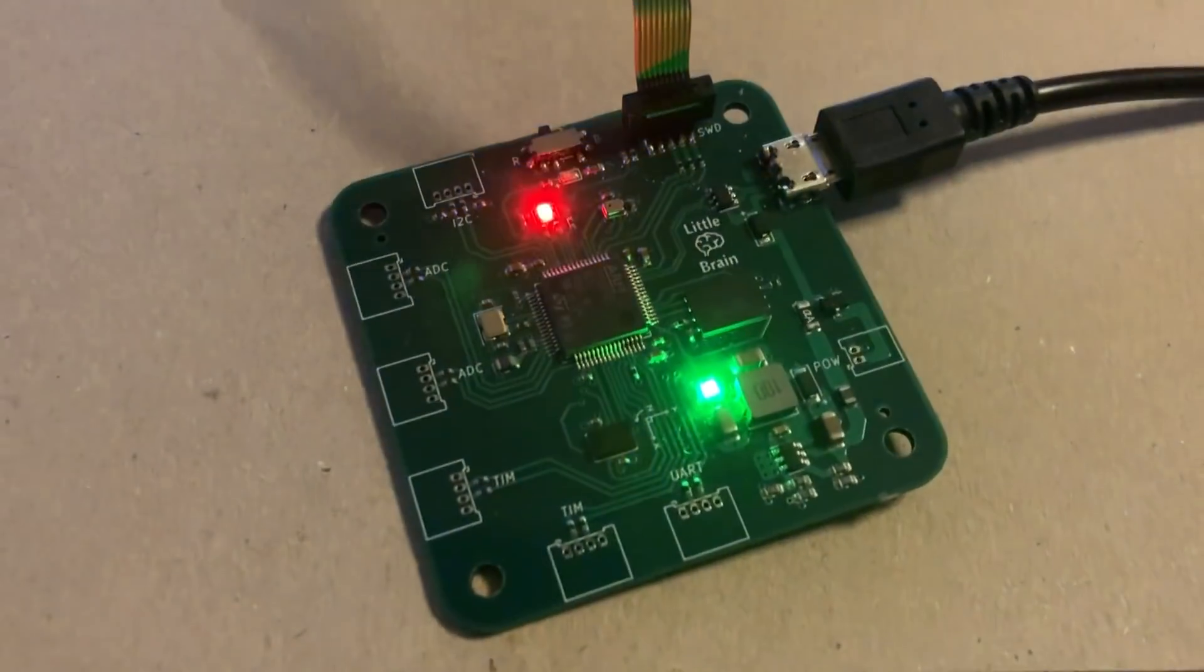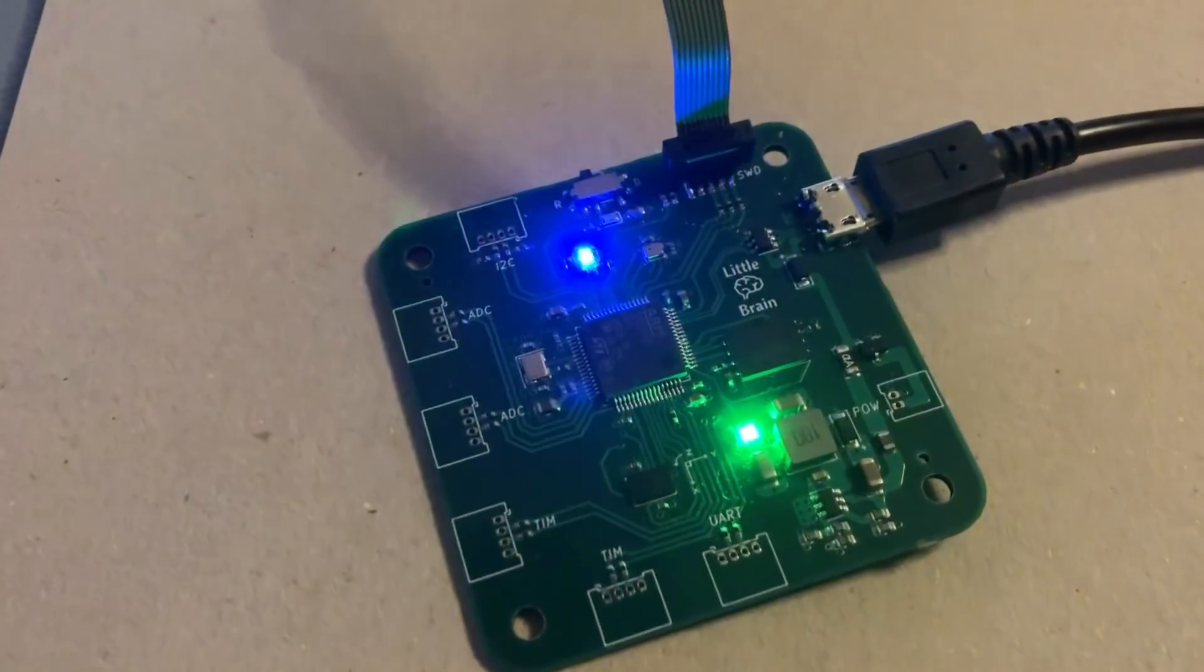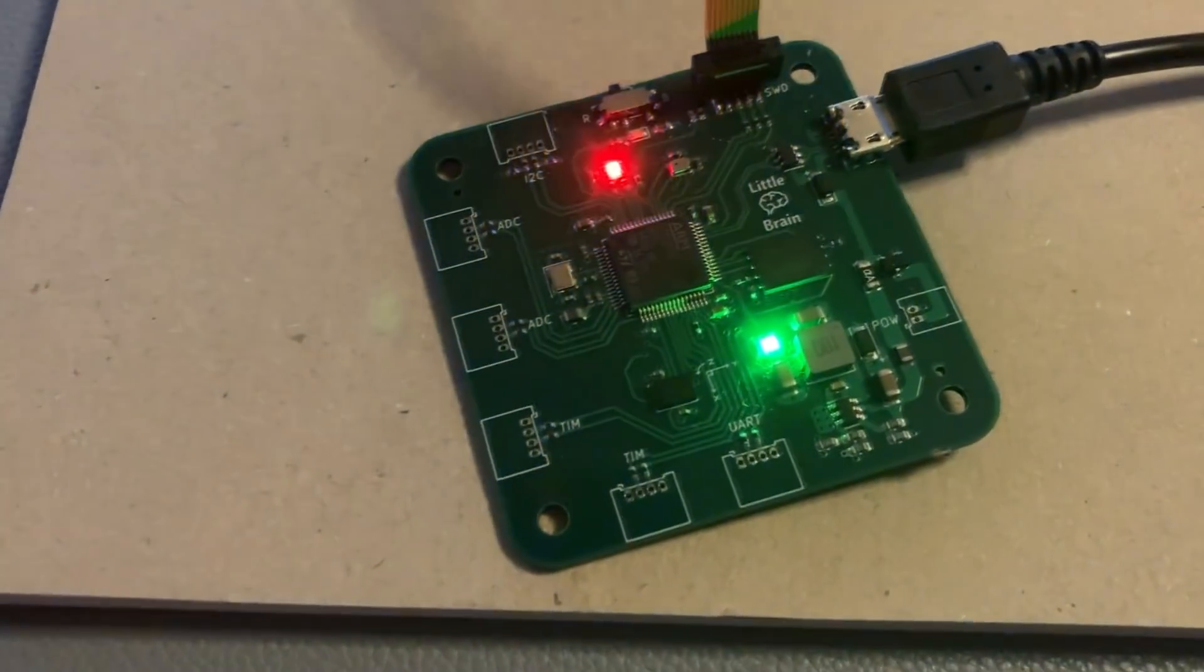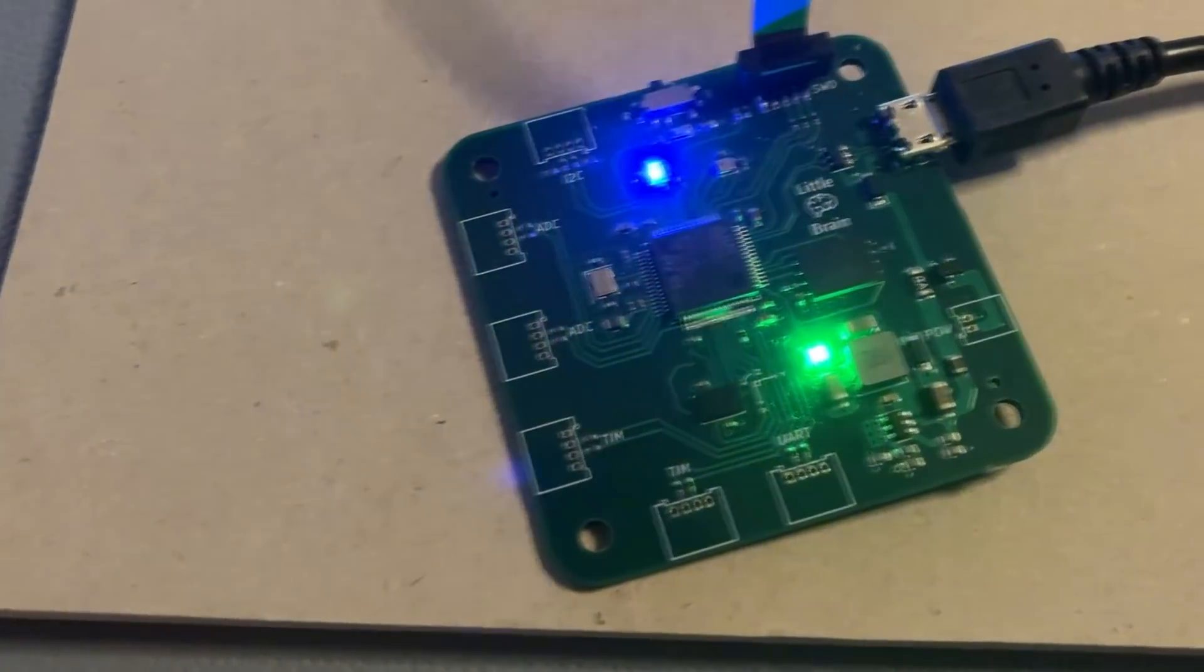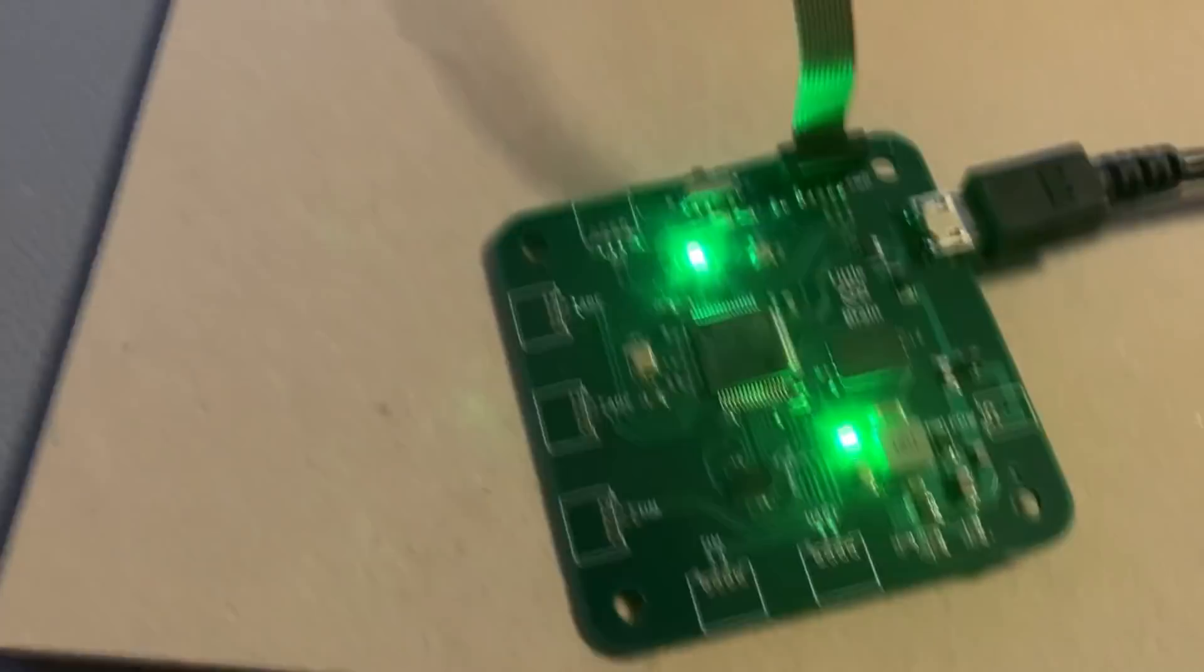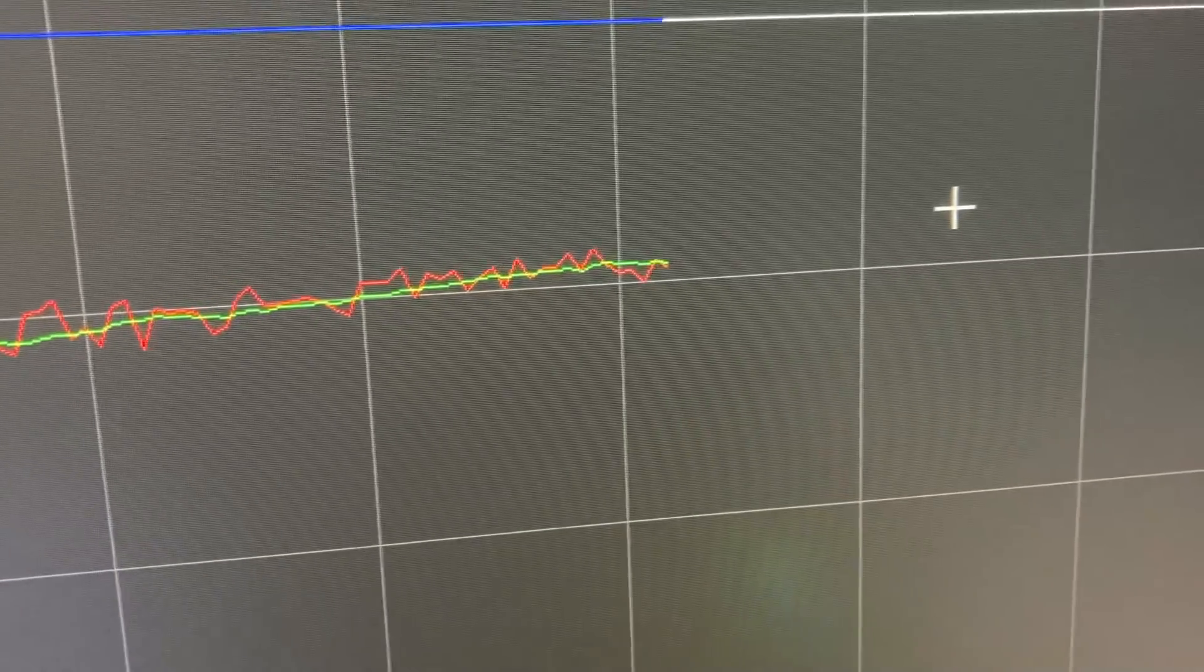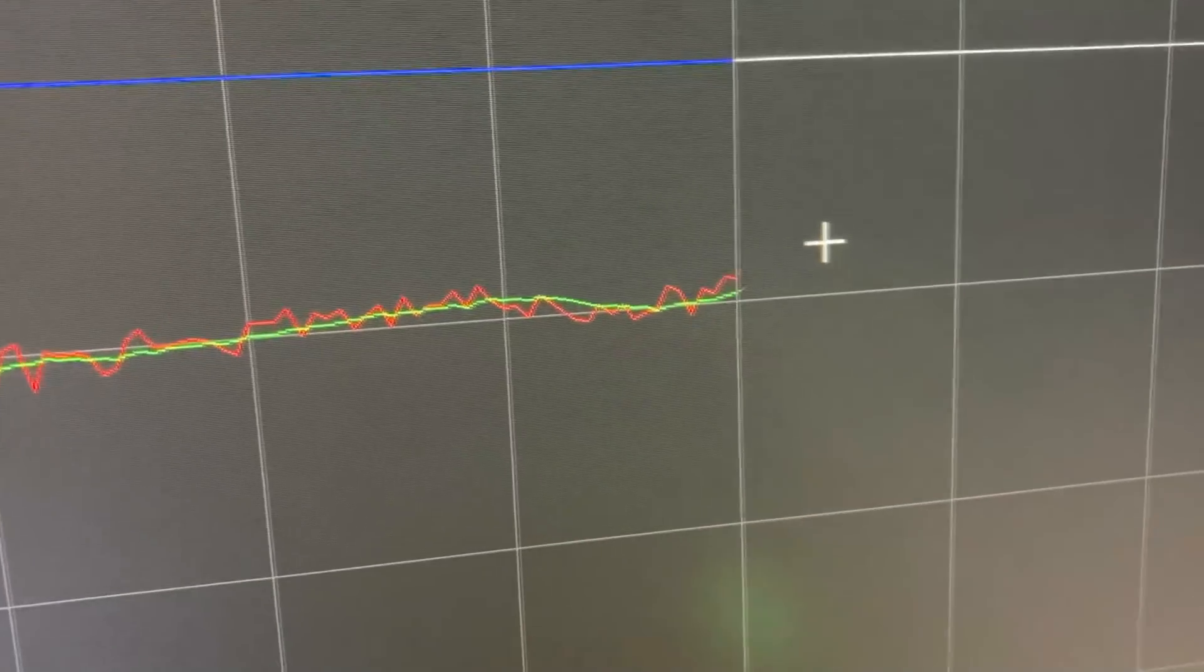In this video we'll be using the Little Brain board and this STM32F4 microcontroller to implement a moving average filter in real time to filter some of this barometric pressure sensor data we are getting here. The program is already running and you can see here the red trace is the raw barometric pressure sensor data and the green trace is the filtered data using a moving average filter.